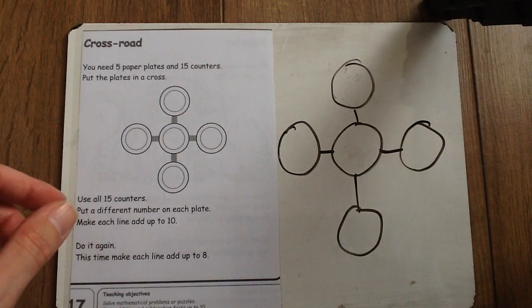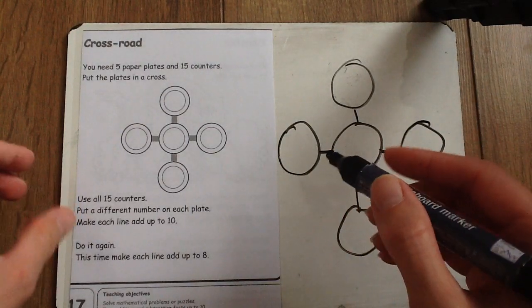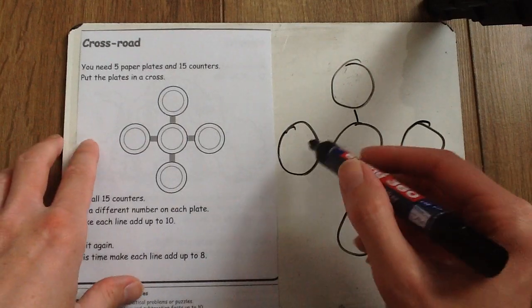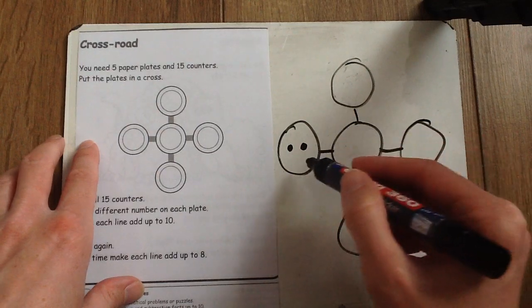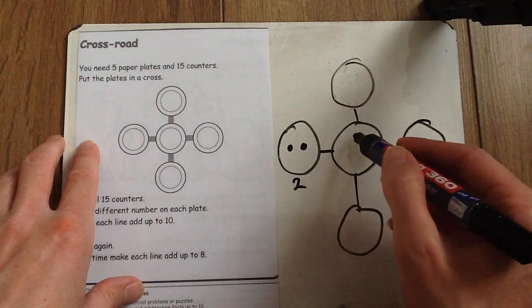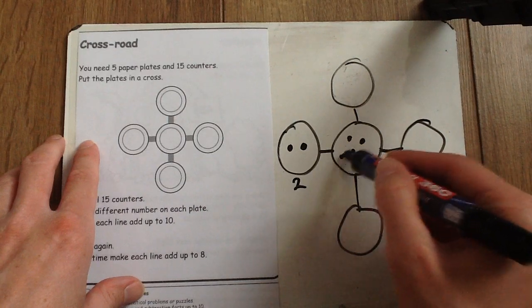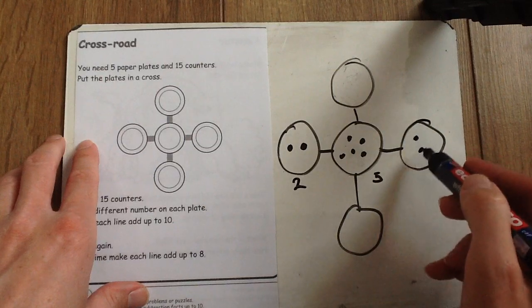So I almost got it on my practice one, how did you get on? Well, here is the solution for trying to get to each line adding up to 10. You need to have 2 counters there, 5 counters in the middle and 3 counters on the outside circle.